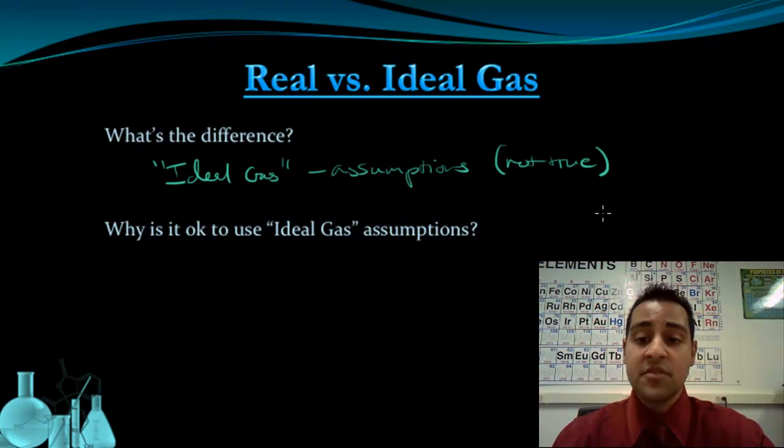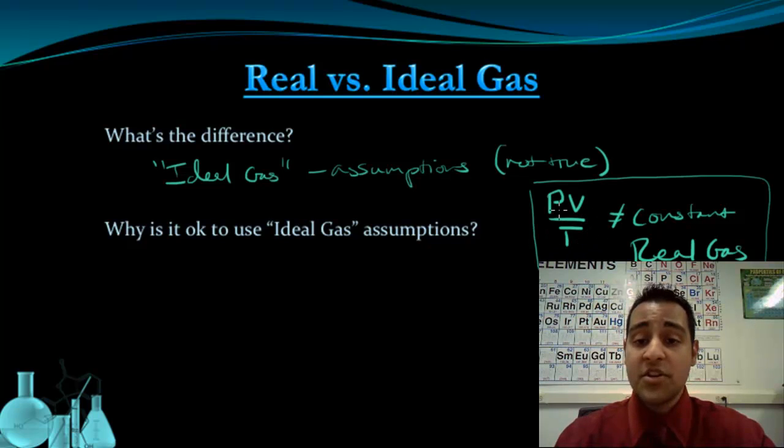One of the things that comes out as a result of this is that the relationship between P, V, and T, this ratio that we said was constant for a fixed amount of gas, turns out it's not constant for a real gas. That means in reality, the pressure and volume and temperature of a gas do not have a constant ratio. The ratio can change if the pressure or temperature or volume changes.